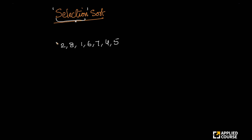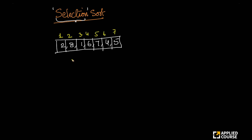What selection sort does is look at the indices I have for this array: index 1, 2, 3, 4, 5, 6, 7. In the first pass or first iteration, I want to find the minimum element. I keep comparing. I compare 2 with 8 — 2 is smaller. Then I compare 2 with 1 — 1 is smaller. I compare 1 with 6 — 1 is still smallest. 1 with 7, 1 with 4, 1 with 5 — 1 is still the smallest.